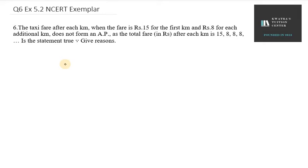Hello everyone, let's start with question number six. The taxi fare after each kilometer, when the fare is Rs.15 for the first kilometer and Rs.8 for each additional kilometer, does not form an AP as the total fare after each kilometer is 15, 8, 8, 8... Is the statement true? Give reasons.